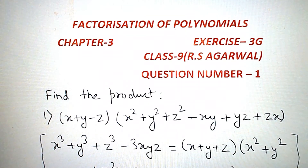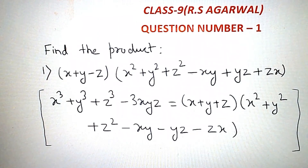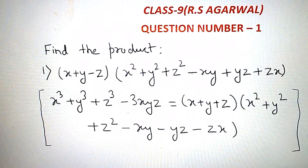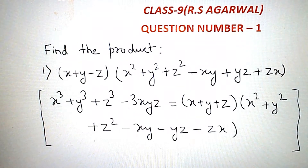Before doing question number 1, एक formula है जिसको जानना ज़रूरी है: x³ + y³ + z³ - 3xyz. इस form में रहेगा तो इसका formula होता है: x³ + y³ + z³ - 3xyz = (x + y + z) into (x² + y² + z² - xy - yz + zx).